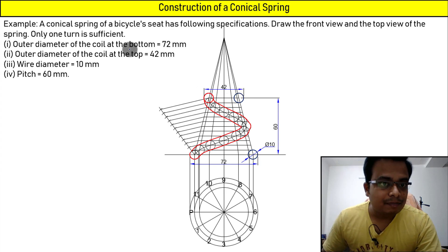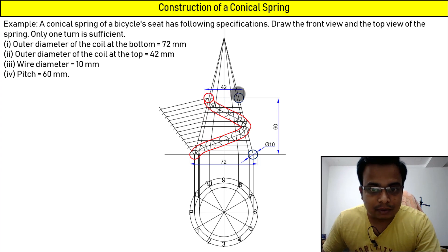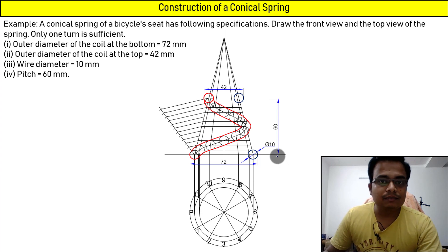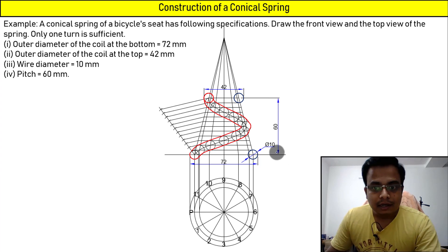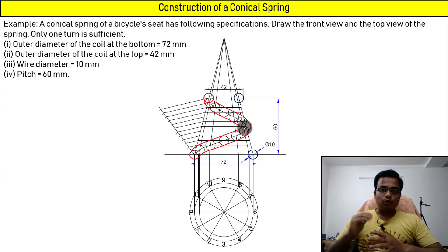This is the outer diameter of the coil at the top, that is 42. This over here is the outer diameter of the coil at the bottom, that is 72. This is the axial advance in one revolution, that is pitch. And this over here represents the wire diameter.